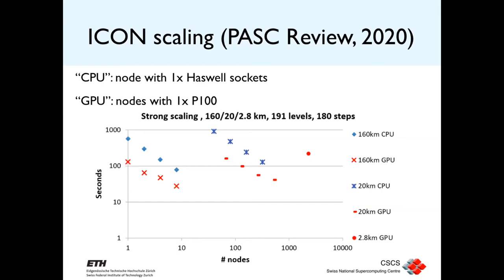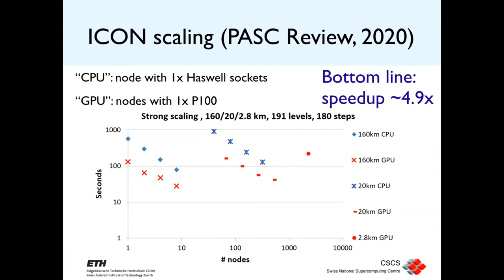Results show very good strong scaling for the CPU and slightly less good scaling for the GPU — we knew you have to keep the GPU occupied for best performance, so we only run the code when a node is essentially fully loaded. Weak scaling is also achieved. The bottom line is we got a 4.9× speedup between a single Intel Haswell CPU and a P100 GPU node.